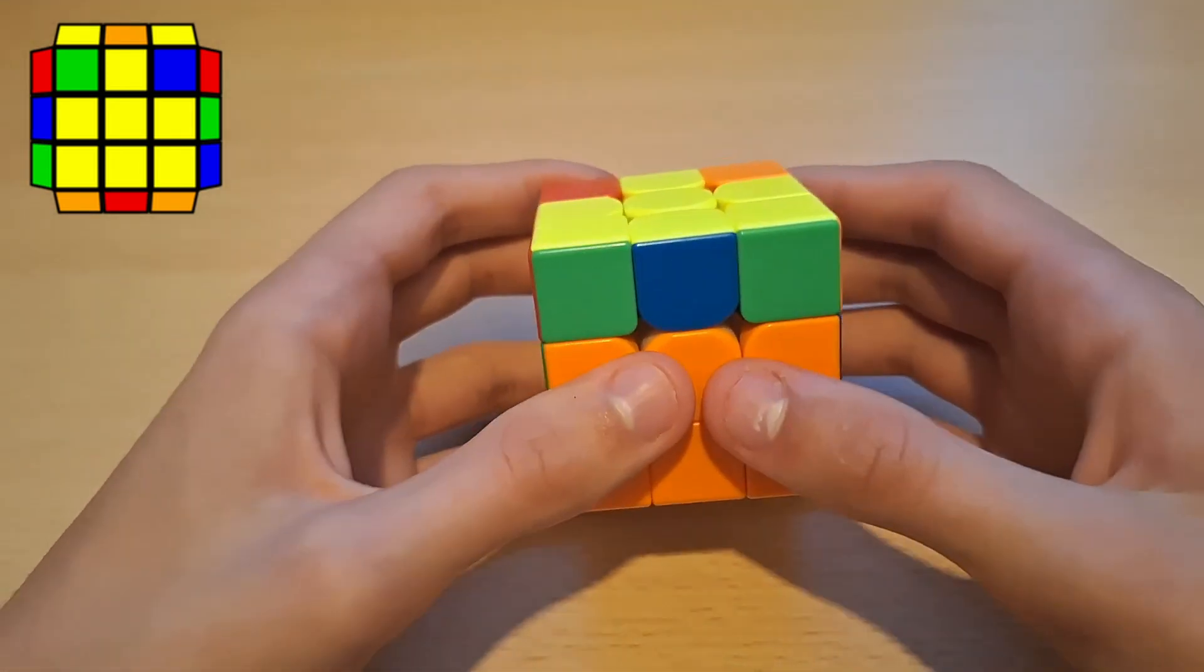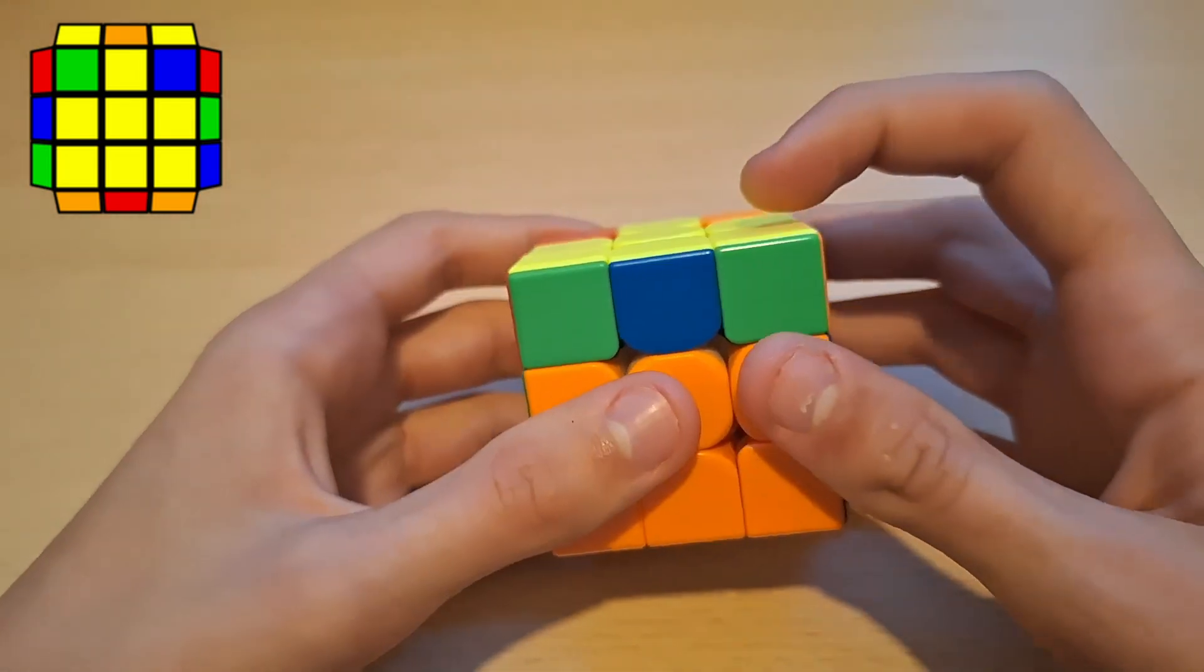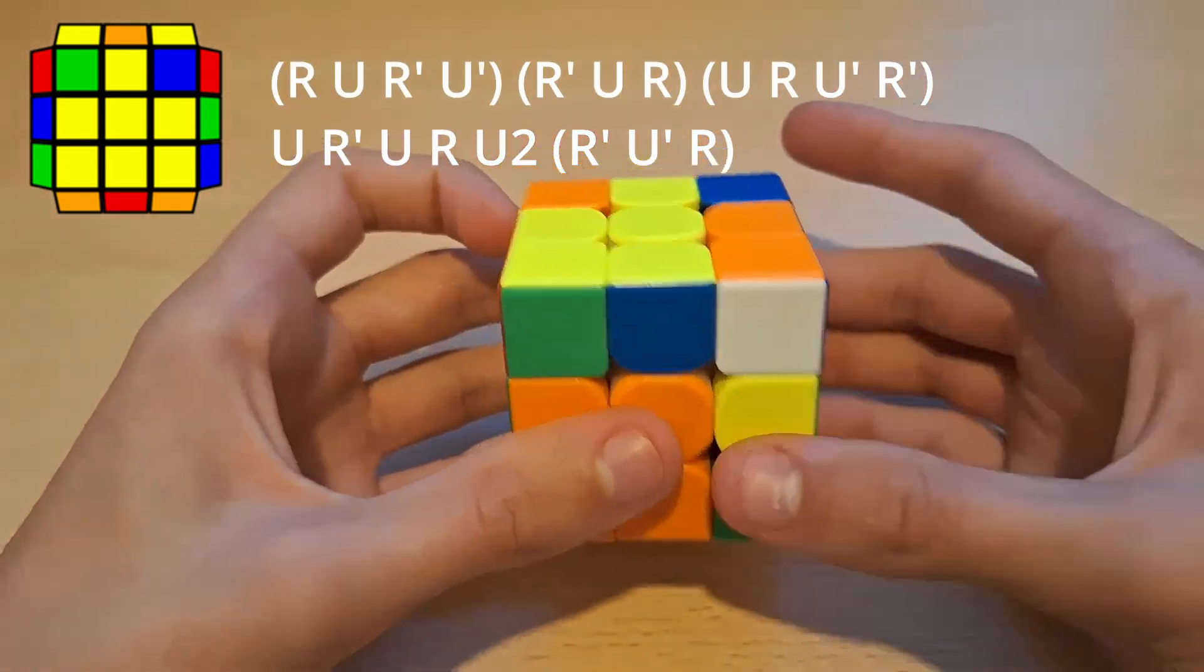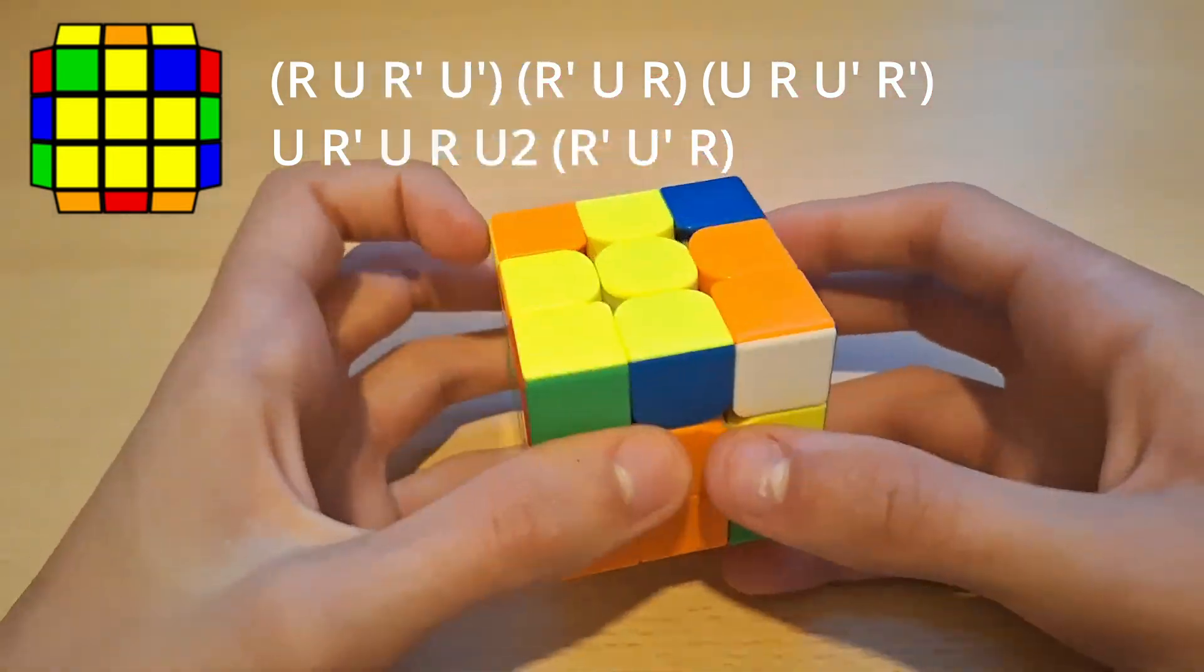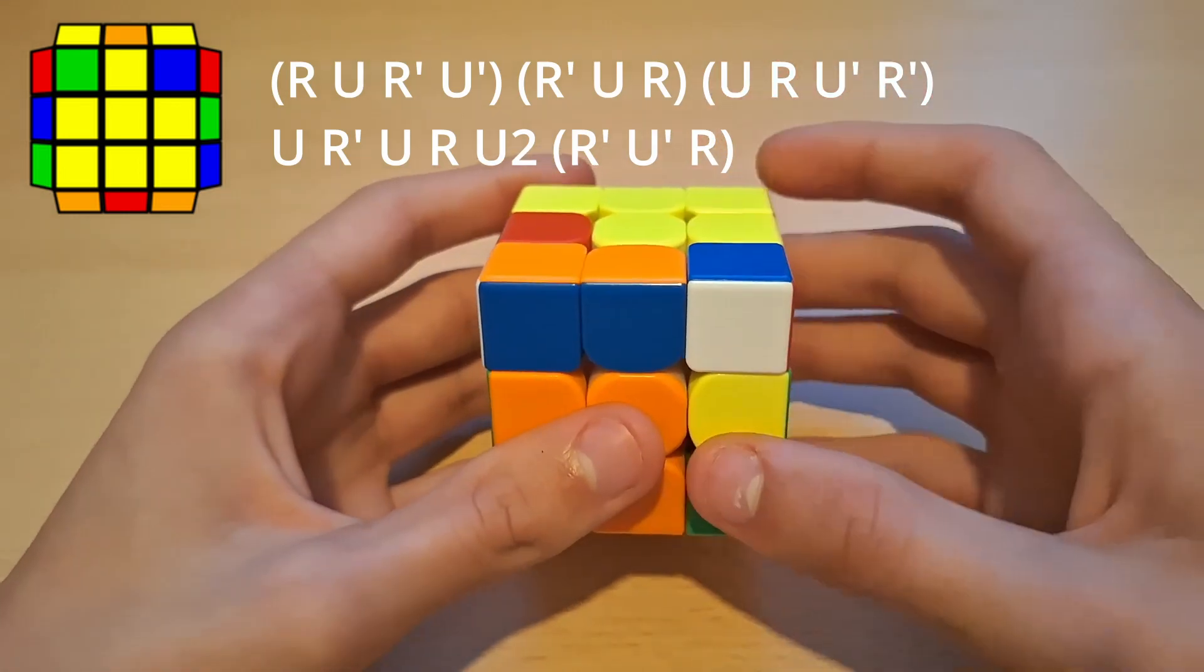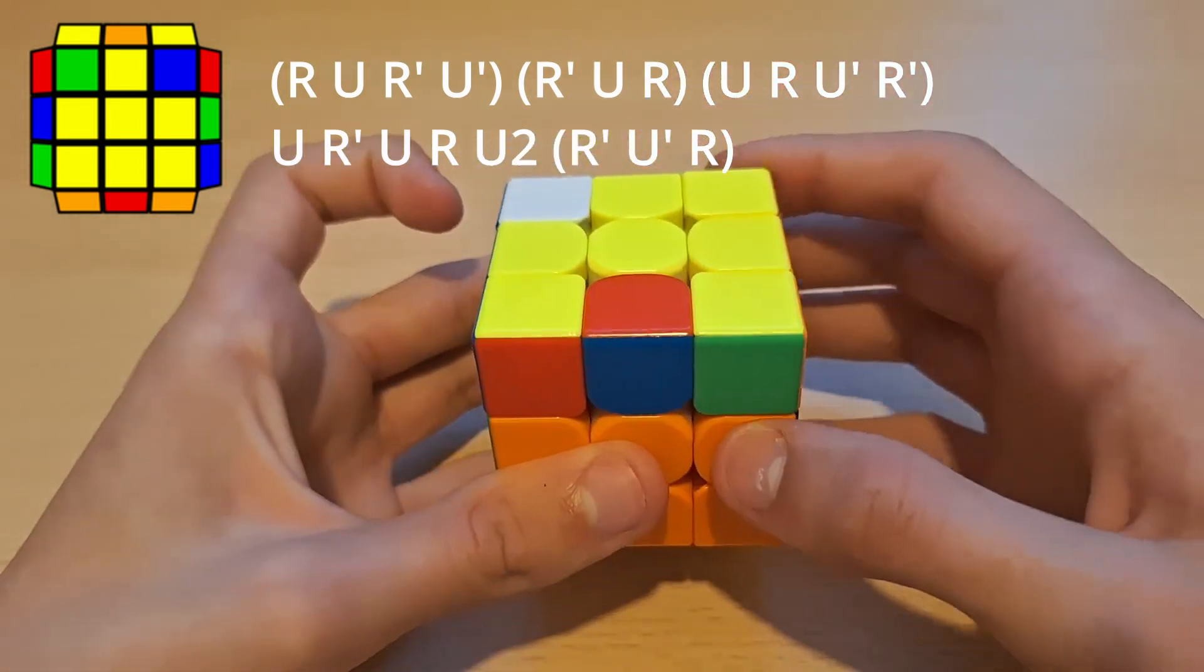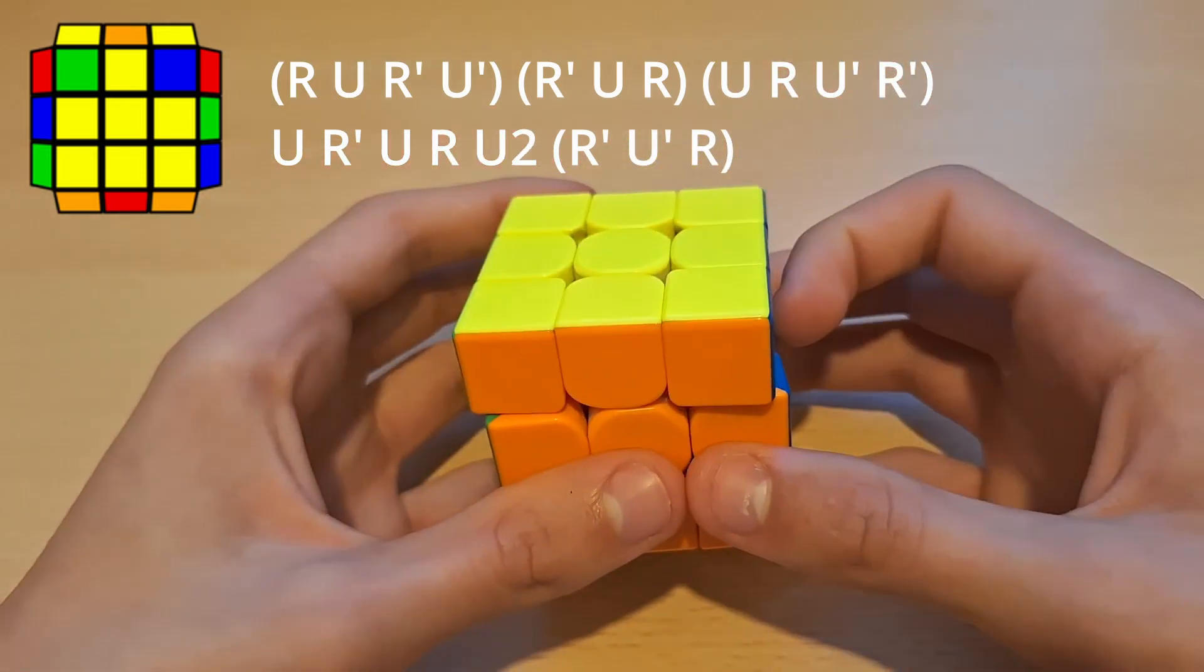Now obviously we don't do that because that's slow. Now what I do instead for this case is this. So how I would memorize this is first of all take this pair out and then take this pair out, but so that it's split. Now insert this pair and set this pair up like this and just insert and that solves the cube.